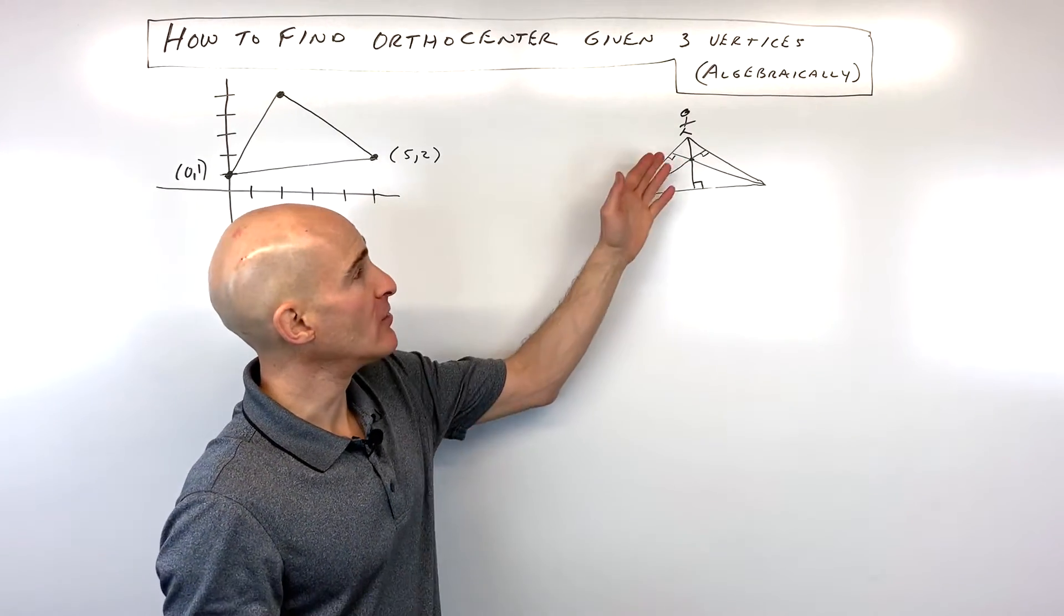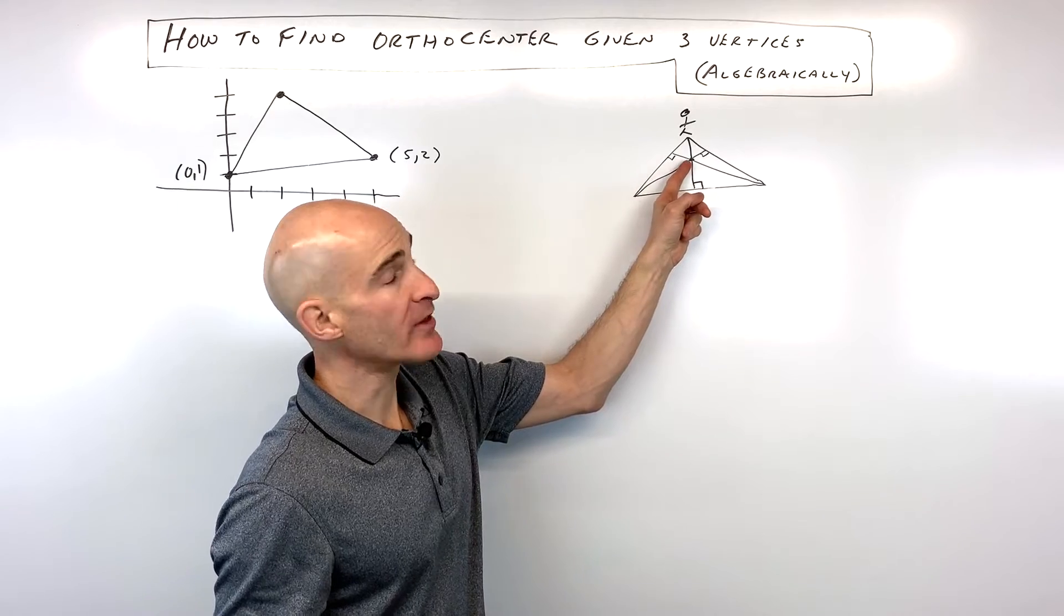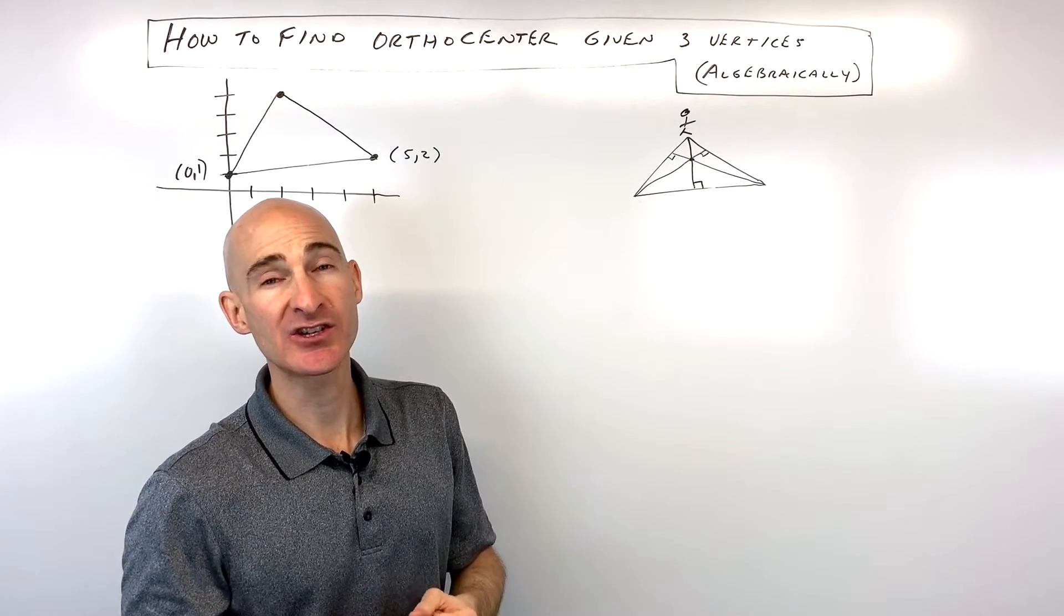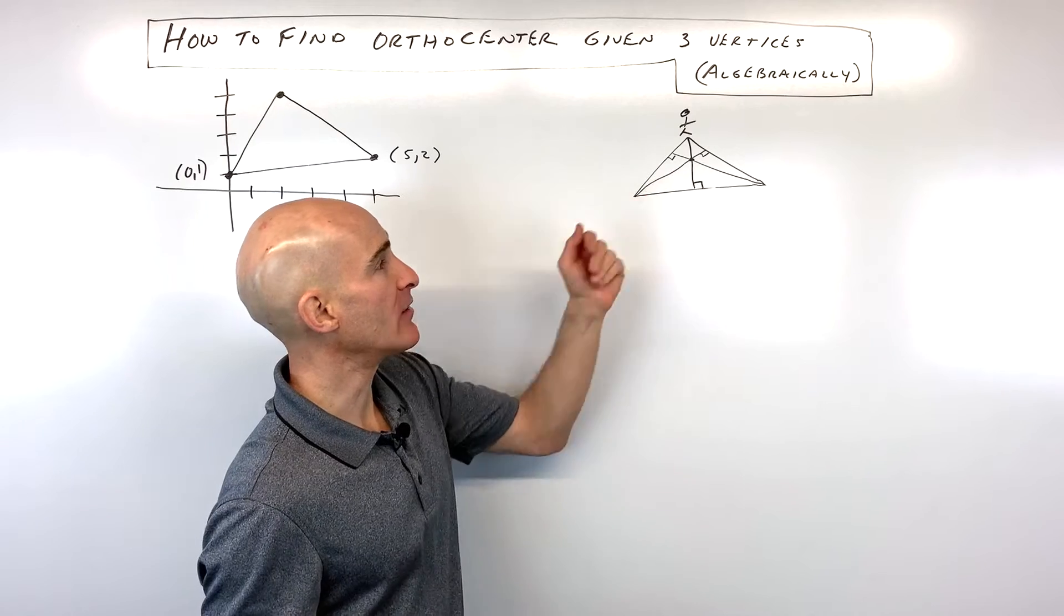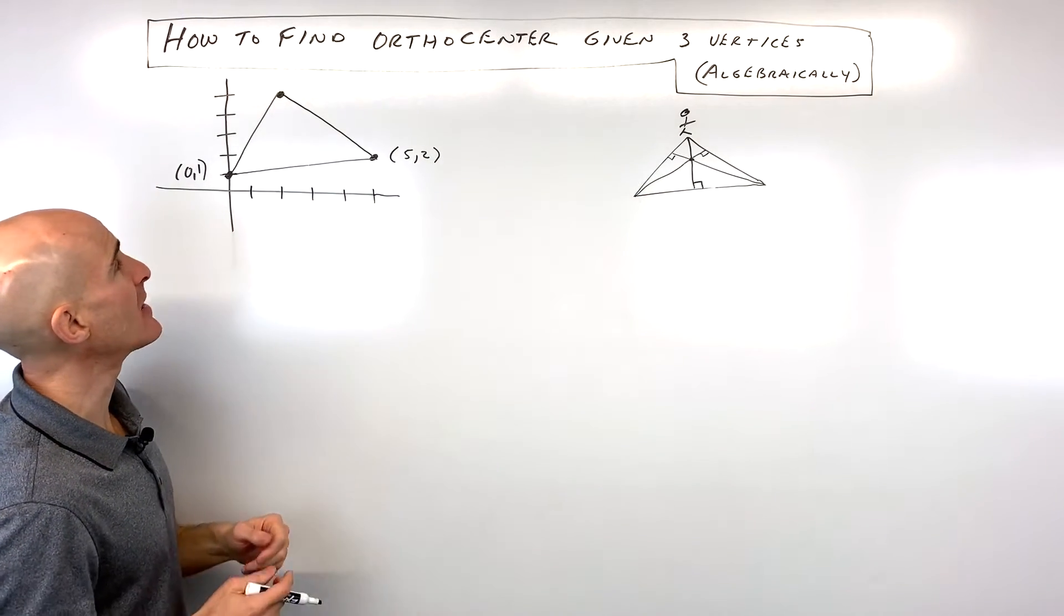You don't have to find all three altitudes. If you just find two of them, where they cross is the common point of intersection called the point of concurrency, which we call the orthocenter. Let's jump into this example.